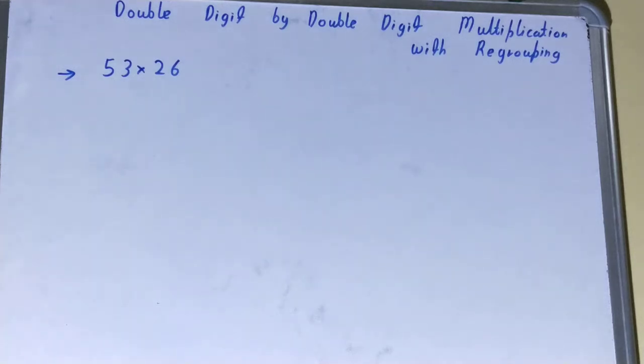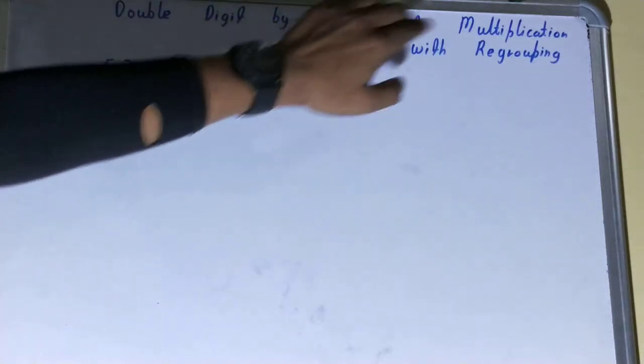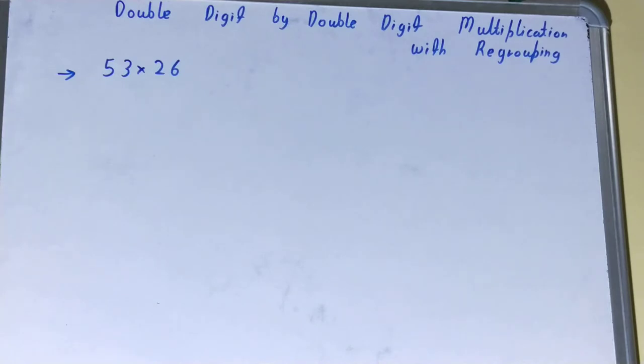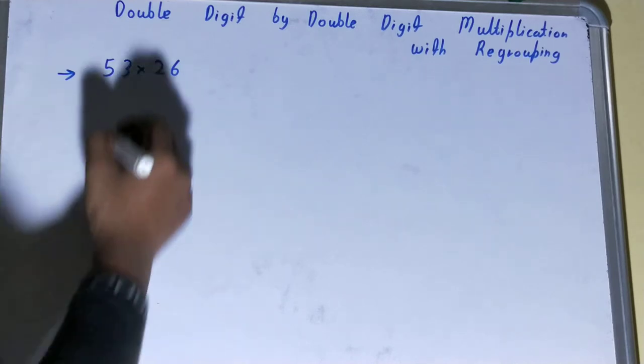Hello friends, and in this video I'll be helping you with double-digit by double-digit multiplication with the regrouping technique. So let's start. This is also called the traditional multiplication process or the general way of multiplying. If you are given two numbers for multiplication...